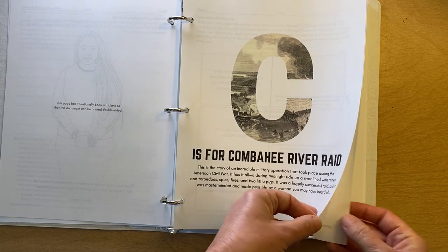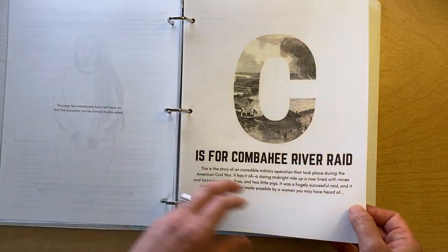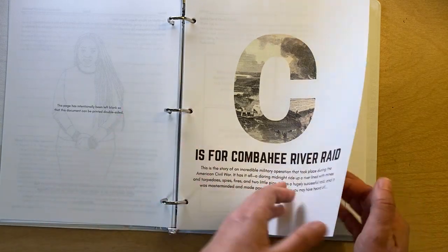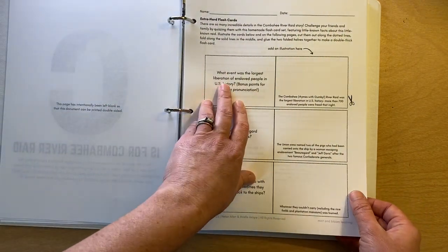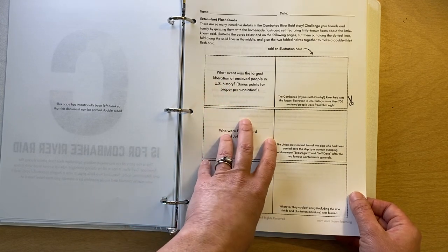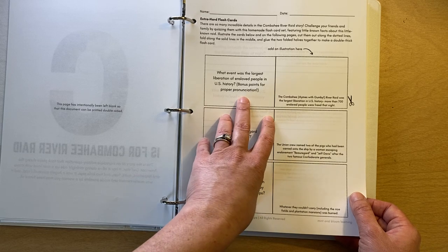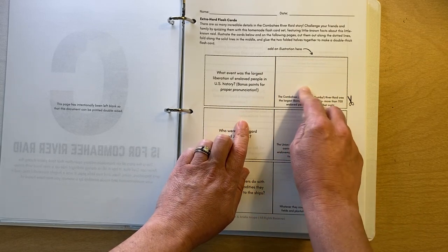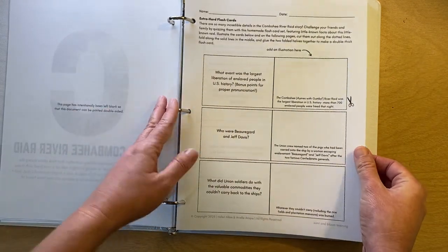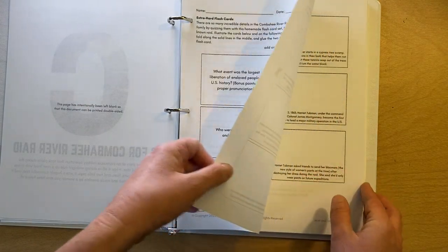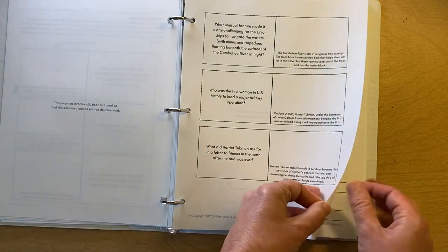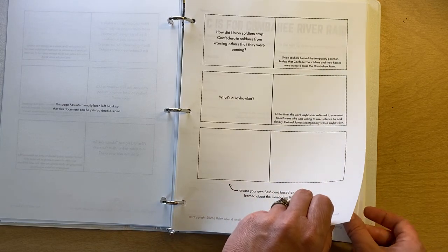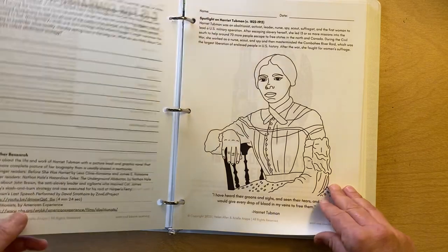Okay. C is for Combahee River Raid. It's pronounced Combahee rhymes with Gumby if you're not from that part of the country. This is one of our favorite stories in American history. So I'm super excited that it's highlighted in our textbook. For this one, we invite kids to make extra hard flashcards. So there's so many incredible details in this Combahee River Raid story and we call some of them out in these flashcards and we invite kids to make an illustration on the answer side of the flashcard. And then they can use them to test the adults or trivia buffs in their life. And we think that you'll be able to stump them with these questions. But it's super fun. And then we leave a blank one for kids to do a little bit of their own research and come up with their own extra hard flashcard.